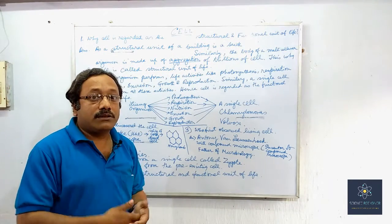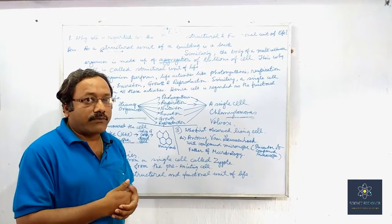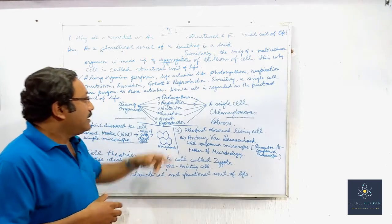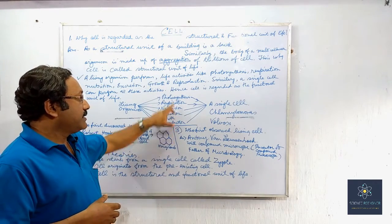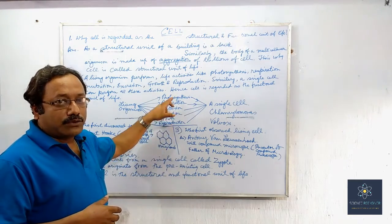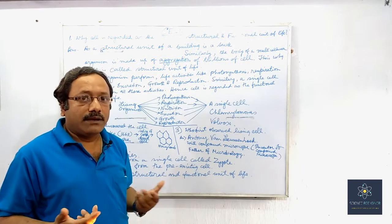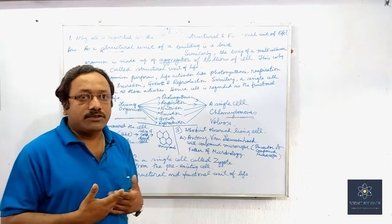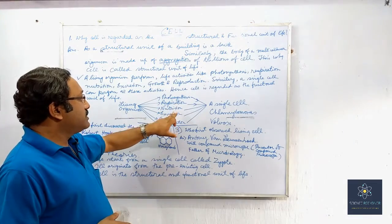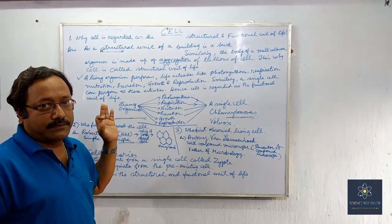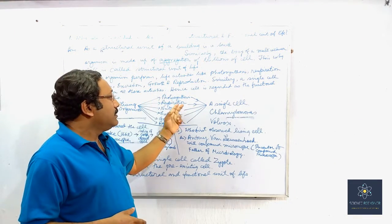Now why is it called the functional unit of life? This is because living organisms perform physiological activities like photosynthesis, respiration, nutrition, excretion, growth, and reproduction. These activities are shown by all living organisms — whether humans, rats, bats, cats, or among the plant kingdom: gymnosperms, angiosperms, and other plants.